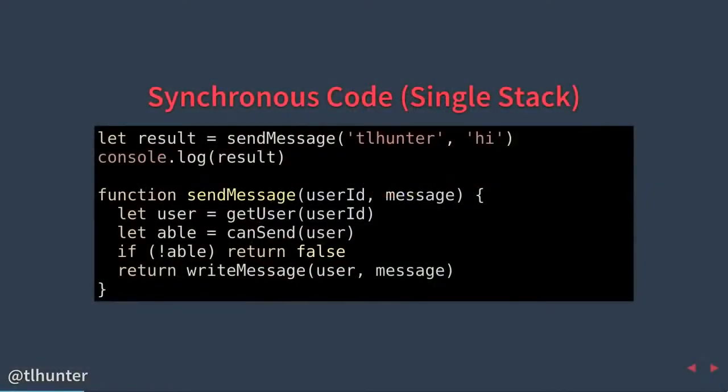Within the sendMessage function, once we get the user ID and the message, we pass the user ID into the getUser function. We receive a complete user object back. We then pass the user object into the canSend method, which determines whether or not we can send a message to that user, returning the variable 'able' — a simple true/false value. If we're not able to send a message, we return false. Otherwise, we call the writeMessage function passing in the complete user object and the original message, then return the result of that operation.